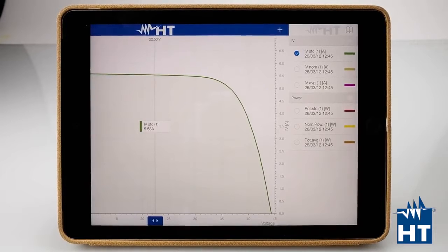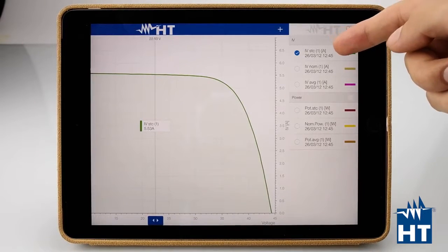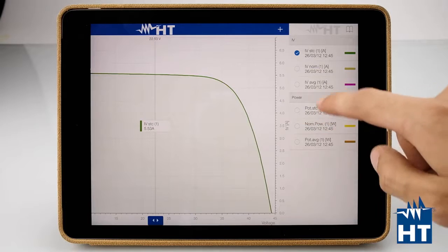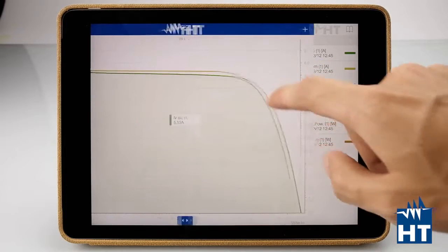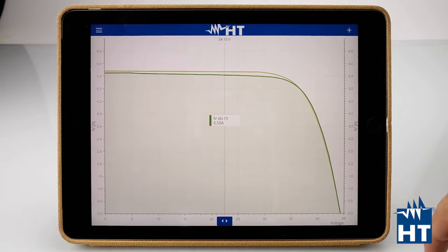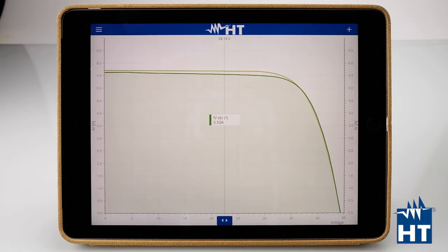For example, here we have STC, which is this curve. Then we can put in the graph IV nominal, which is the nominal curve from the manufacturer. So without any calculation, it's just the standard curve from the manufacturer. As you can see, here we have some deltas, some differences.